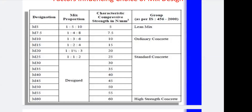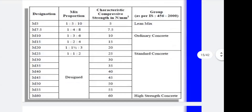M5 and M7.5 belong to the group called lean mixes. Apart from M5 to M80, there are higher designations like M85, M100, and M150 also used in construction — for example, M90 grade concrete was used in construction of the Burj Khalifa. So there are several grade designations available beyond the standard range.